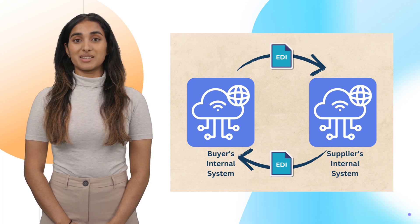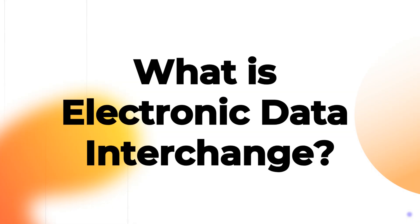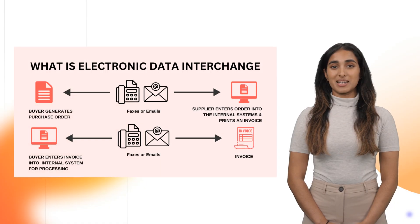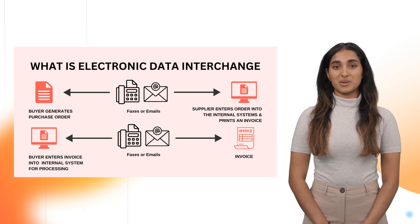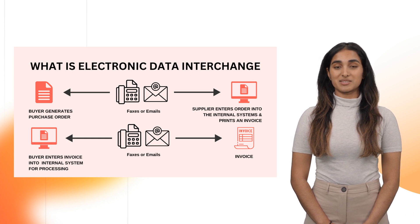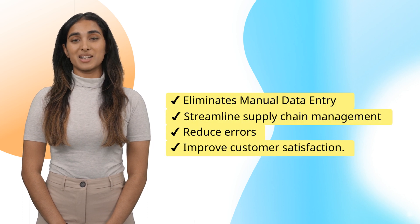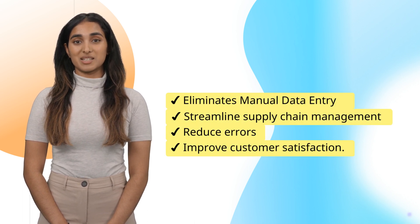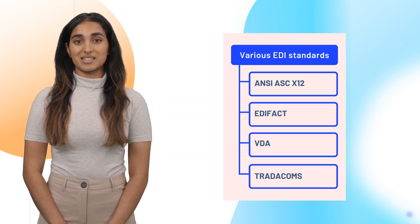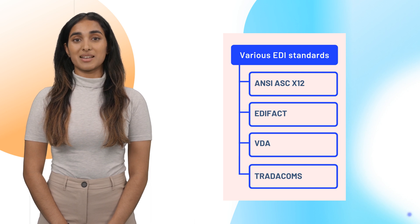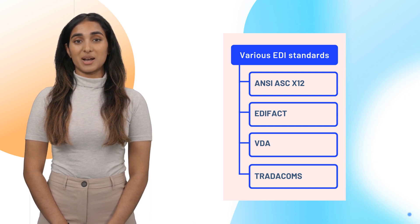But before that, we need to start with the basics. What is Electronic Data Interchange? Electronic Data Interchange, or EDI, facilitates the digital exchange of standard business documents between computers. It allows organizations to electronically share invoices, purchase orders, and other records over networks. EDI eliminates manual data entry and streamlines supply chain management, reducing errors and improving customer satisfaction. Various EDI standards like ANSI ASC X12, EDIFACT, VDA, and Tradacoms ensure smooth communication and automate data exchange, replacing paper-based methods.